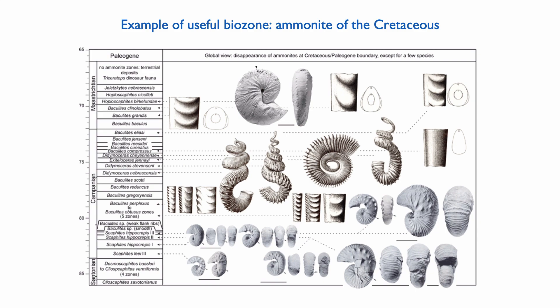Ammonites also colonize the entire ocean. So a lot of the Mesozoic is defined — certainly the Cretaceous in the example I give — by ammonite zones. And again, that's a very powerful approach of biostratigraphy.